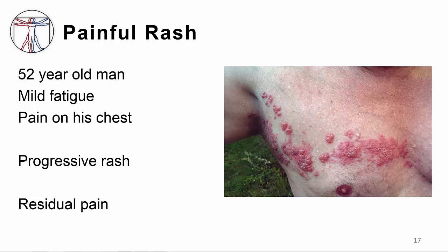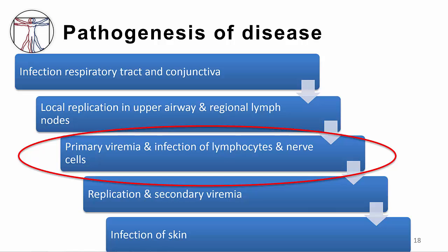A 52-year-old man with diabetes noticed increasing fatigue and had to leave work early. He began having pain on his right chest with light touch, and two days later noticed a new rash on his chest. The rash eventually resolved over two weeks, but the skin remained very tender to touch. This patient has shingles or zoster, the disease that occurs when VZV reactivates. The key step is the primary viremia infecting nerve cells; the virus persists in a latent phase until immune surveillance by T cells is no longer effective and the virus starts to replicate.